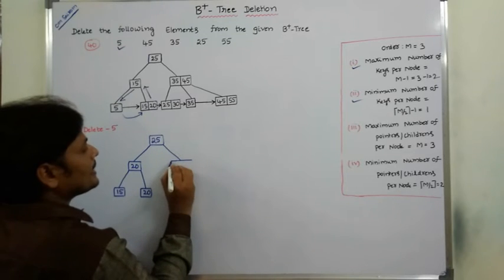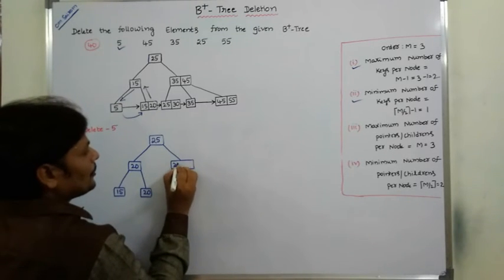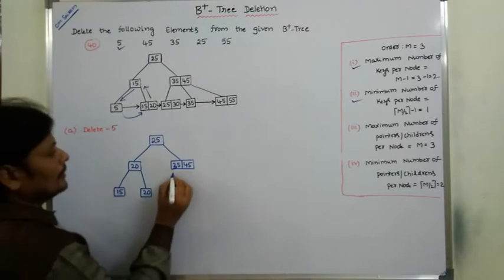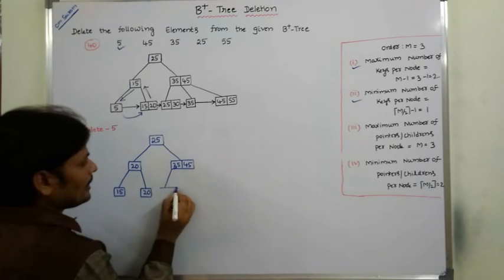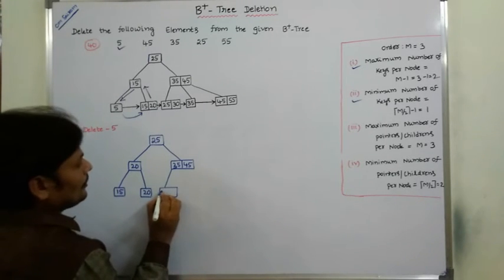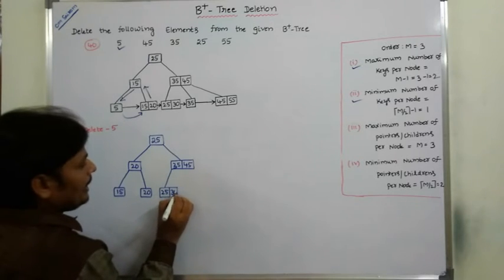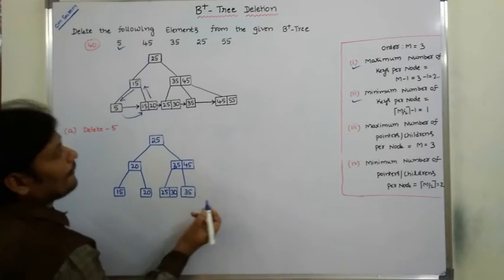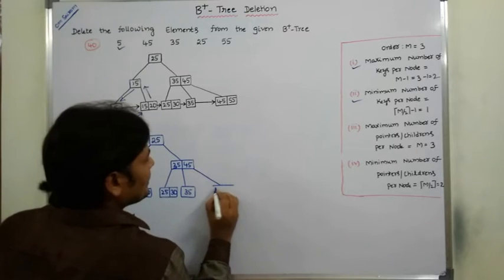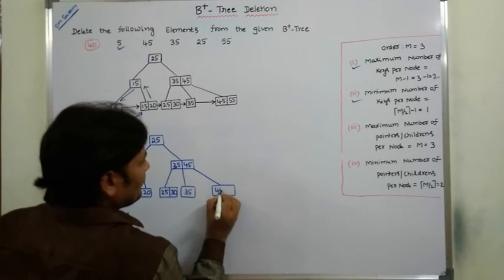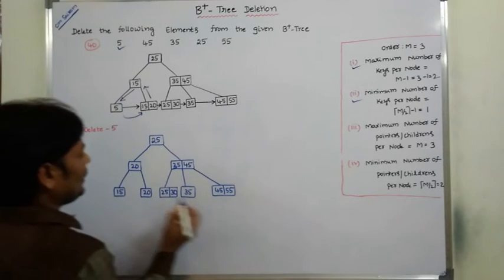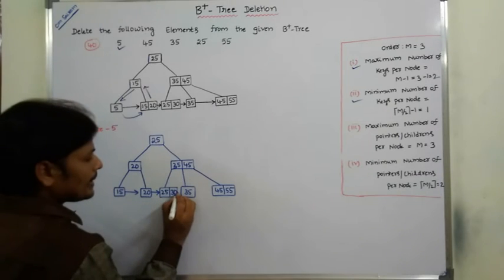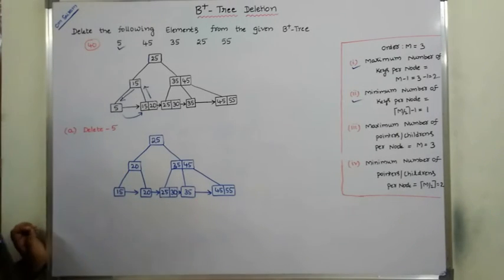After deleting key element 5, this is the resultant B+ tree. The right subtree of 25 — containing 35 and 45 with children 25, 30, and 35 — remains unchanged.